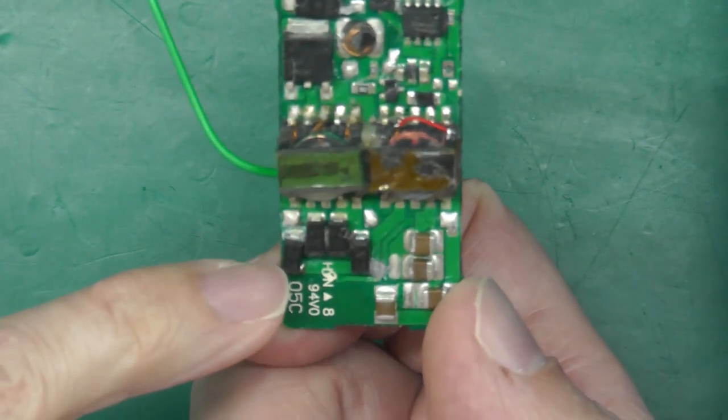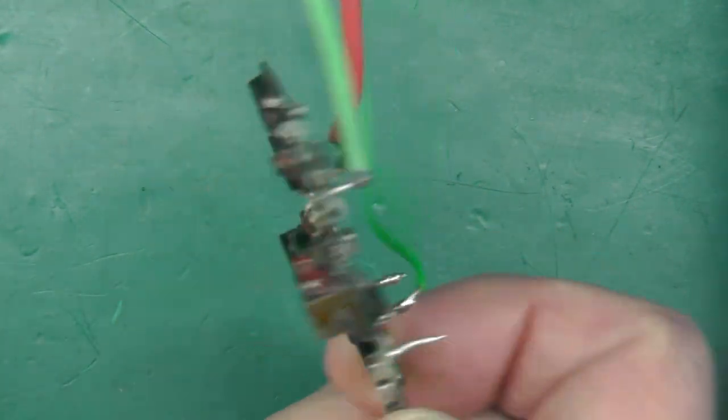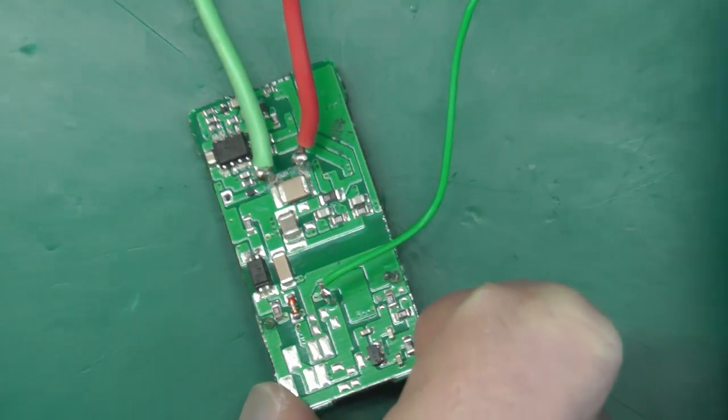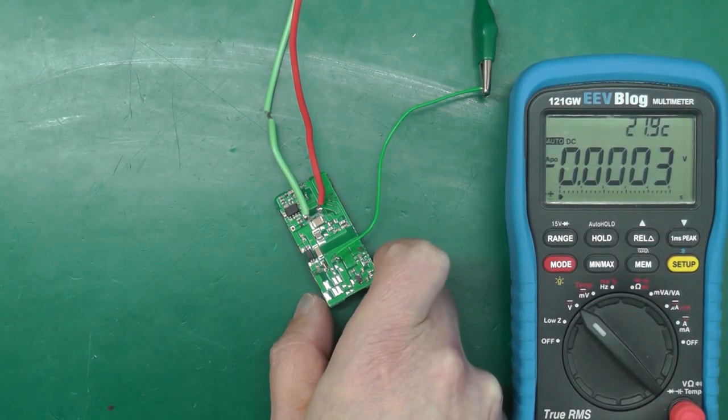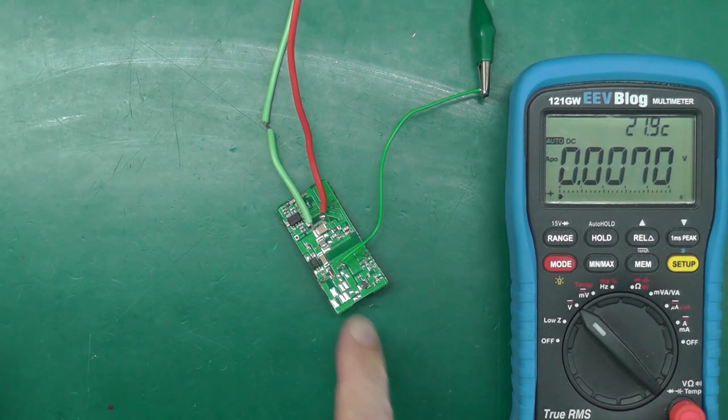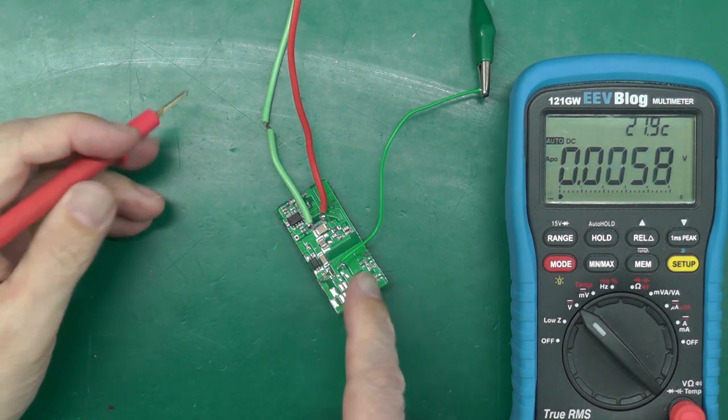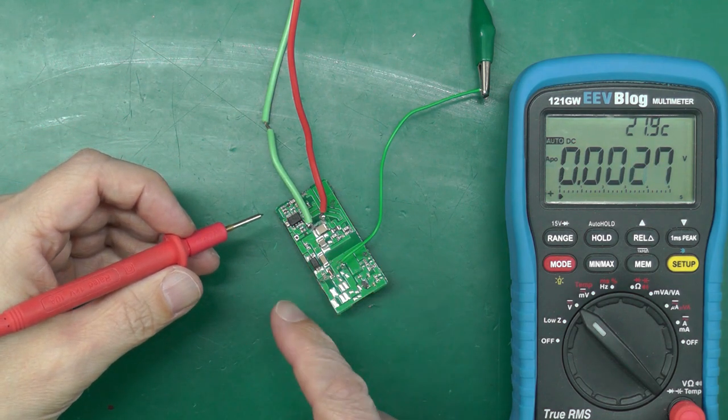I've obviously resoldered the diode in place. Let's go for a power-up. I'll zoom out a bit. We've got the three terminals at the other end—center's zero volts, and you've got plus and minus 18 for the output.